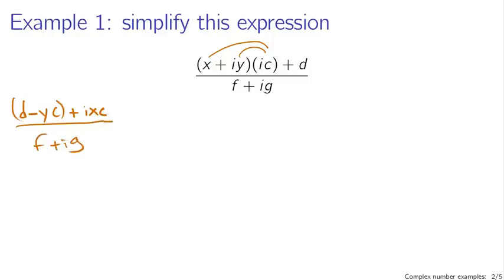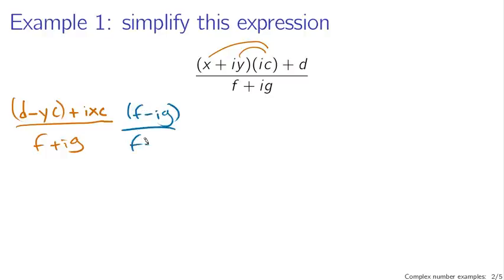Now in order to simplify this, we have a complex number in the denominator. You know you need to multiply by the complex conjugate and divide by the complex conjugate — so f minus ig divided by f minus ig.